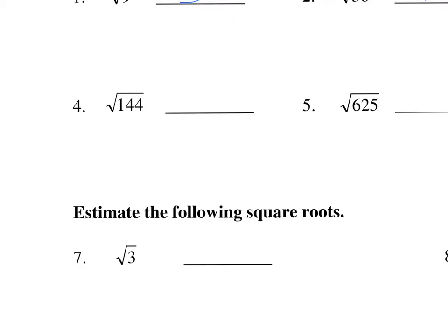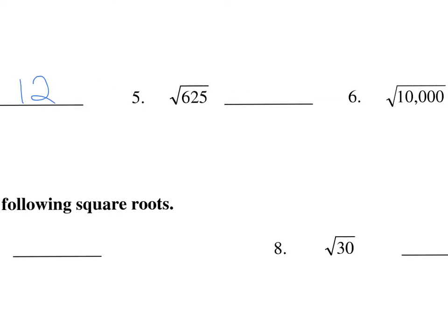The square root of 144 — what number times itself makes 144? That would be 12. The square root of 625 may not be readily known, but if you watched the lecture, I wrote this one on the list because it's a really common radicand. The square root of 625 is 25; 25 times 25.